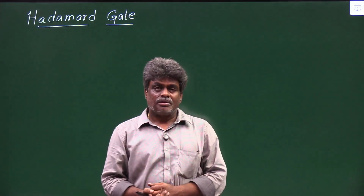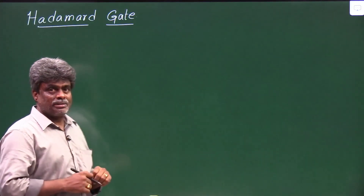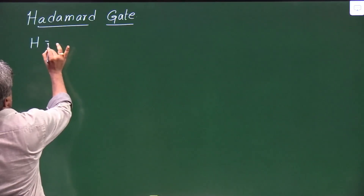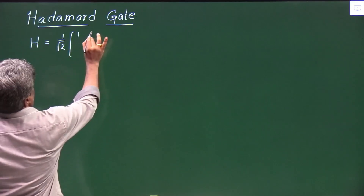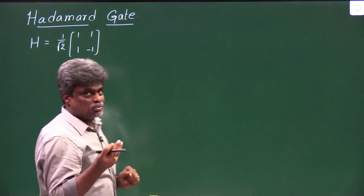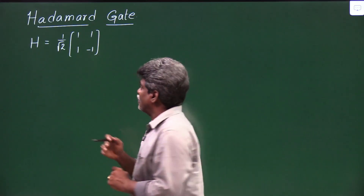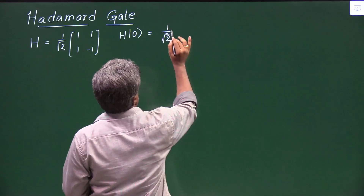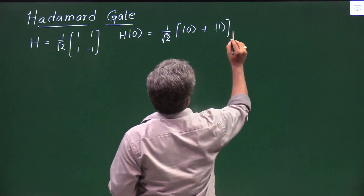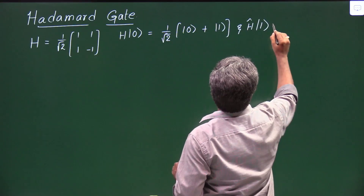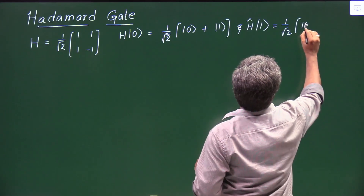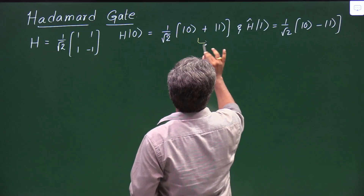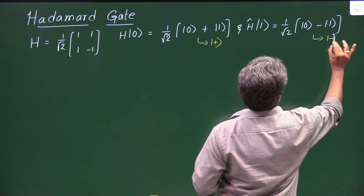Welcome to UV Physics Academy. Here I'm going to discuss one small trick on the Hadamard gate. The Hadamard operator is (1/√2) times the matrix [[1,1],[1,−1]]. It transforms the computational basis to the diagonal basis. So if the Hadamard operates on |0⟩ we get (1/√2)(|0⟩+|1⟩), which is the diagonal basis state |+⟩, and if it operates on |1⟩ we get (1/√2)(|0⟩−|1⟩), which is the diagonal basis state |−⟩.